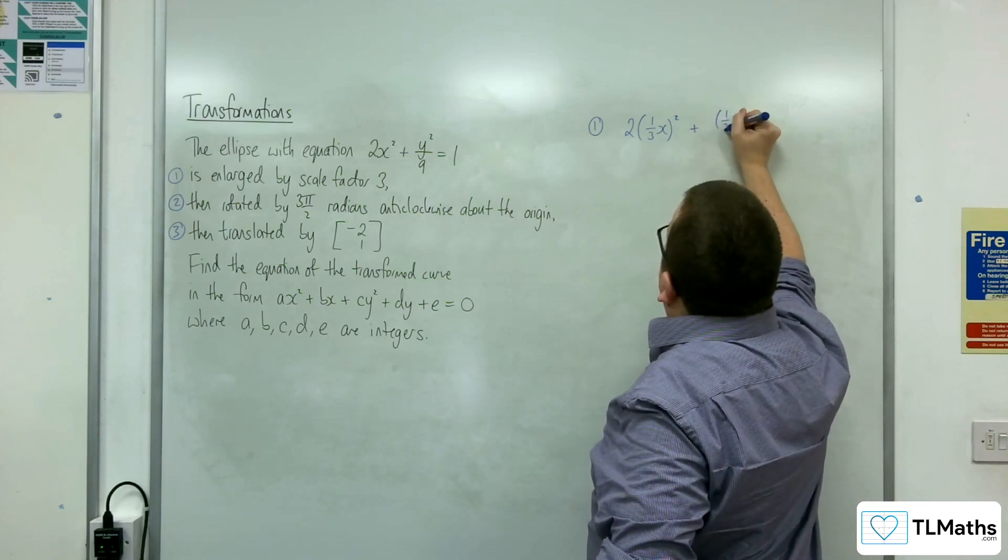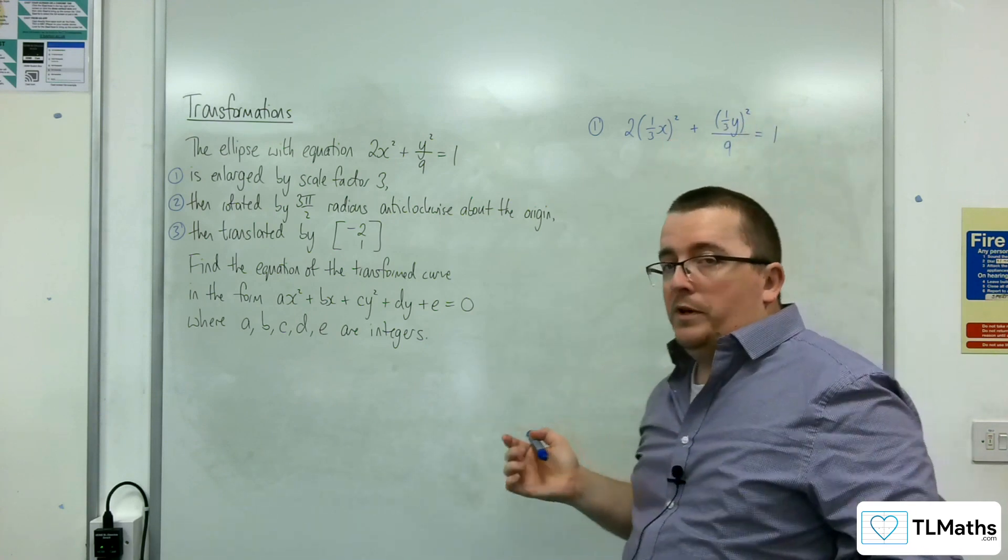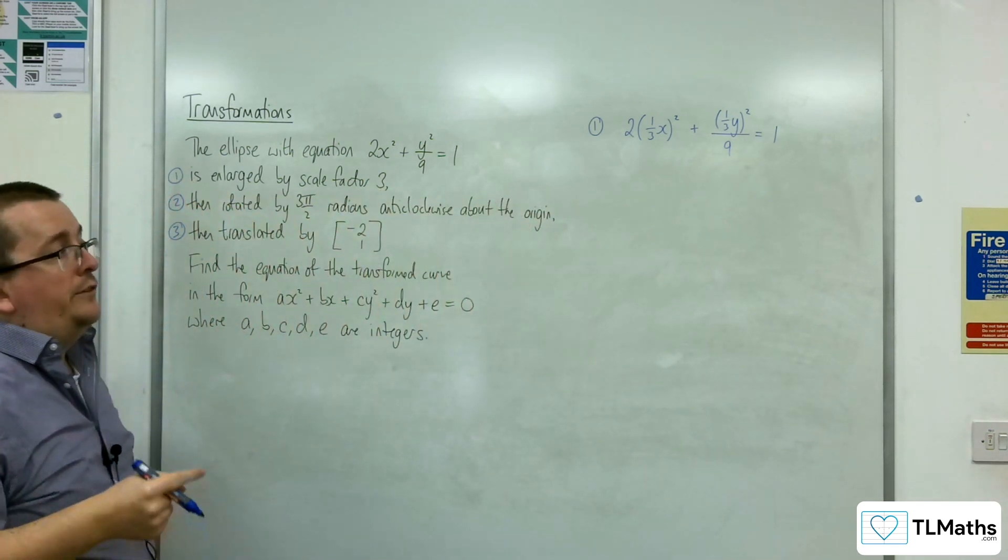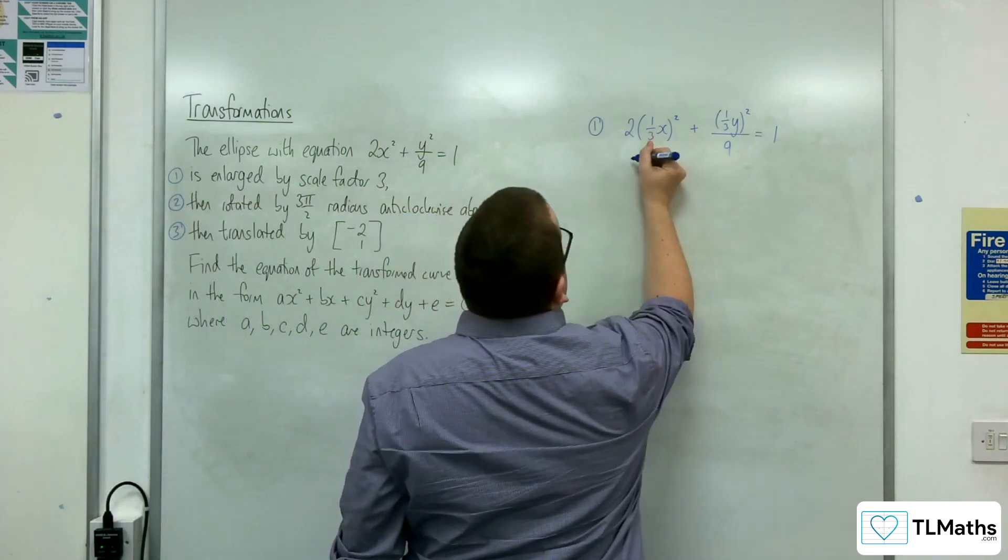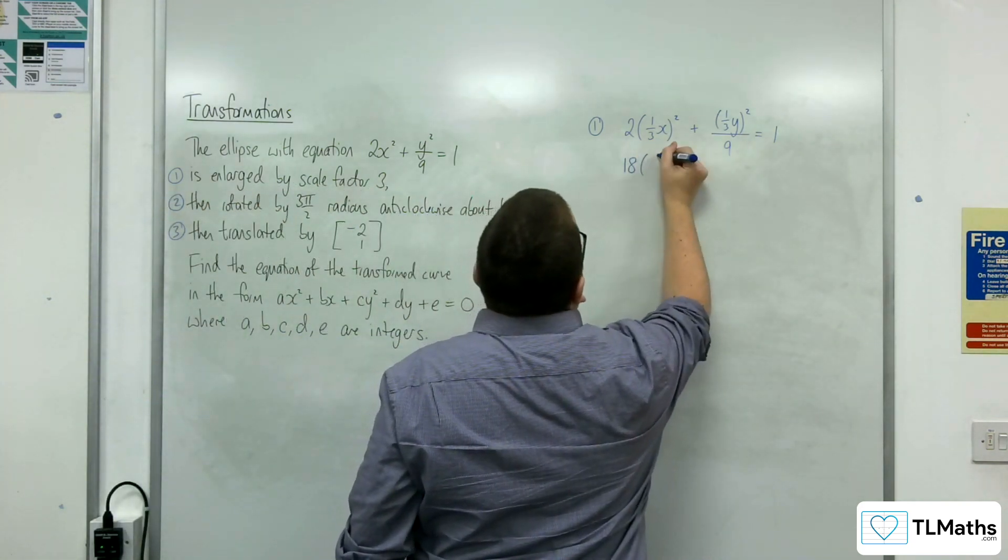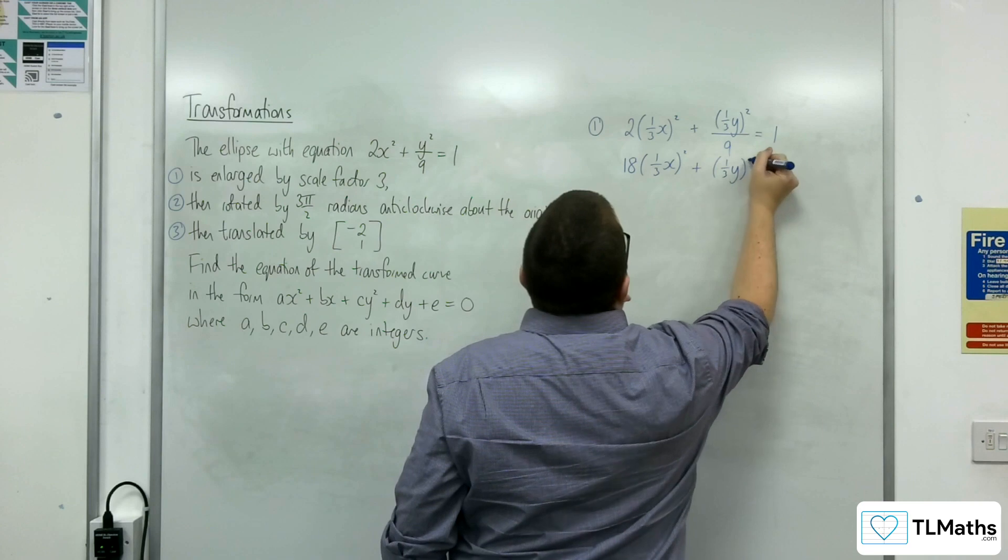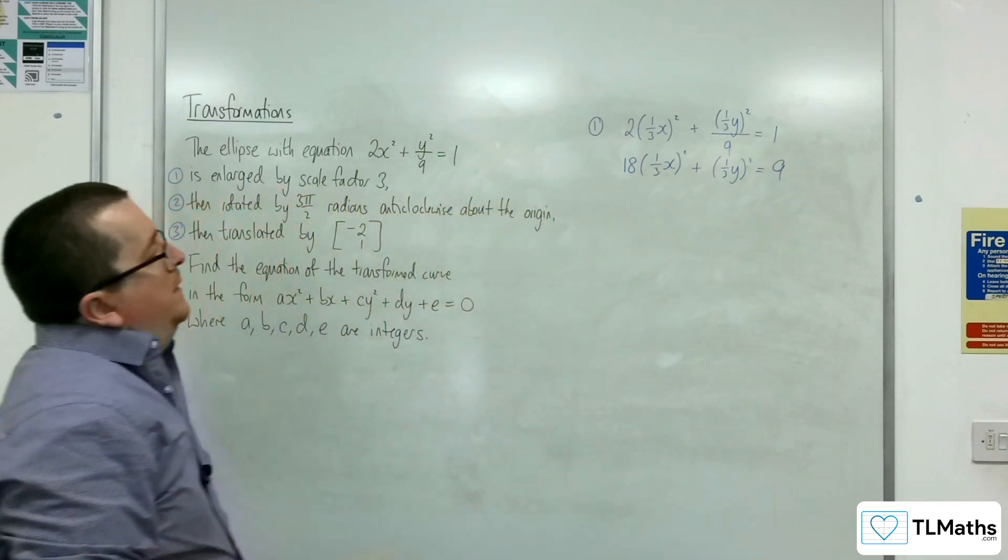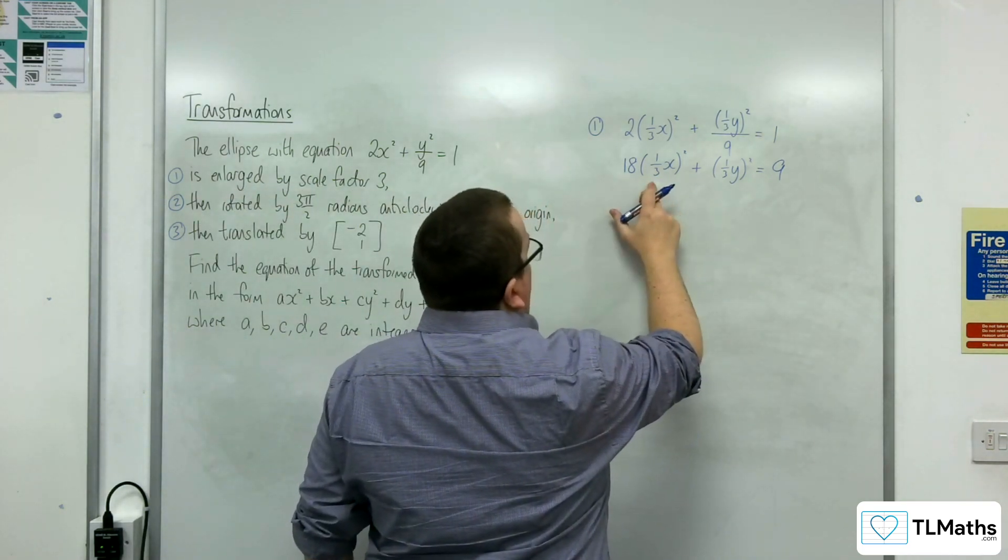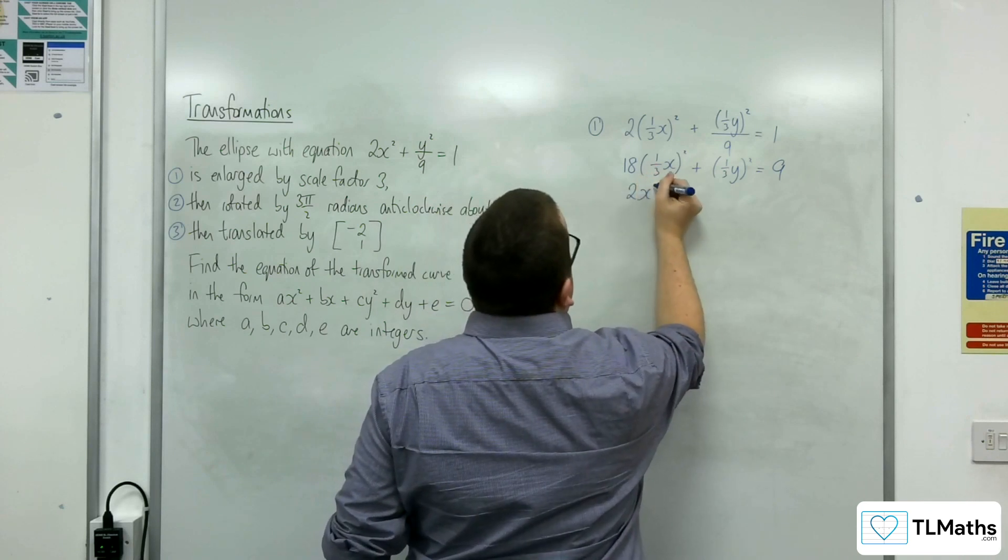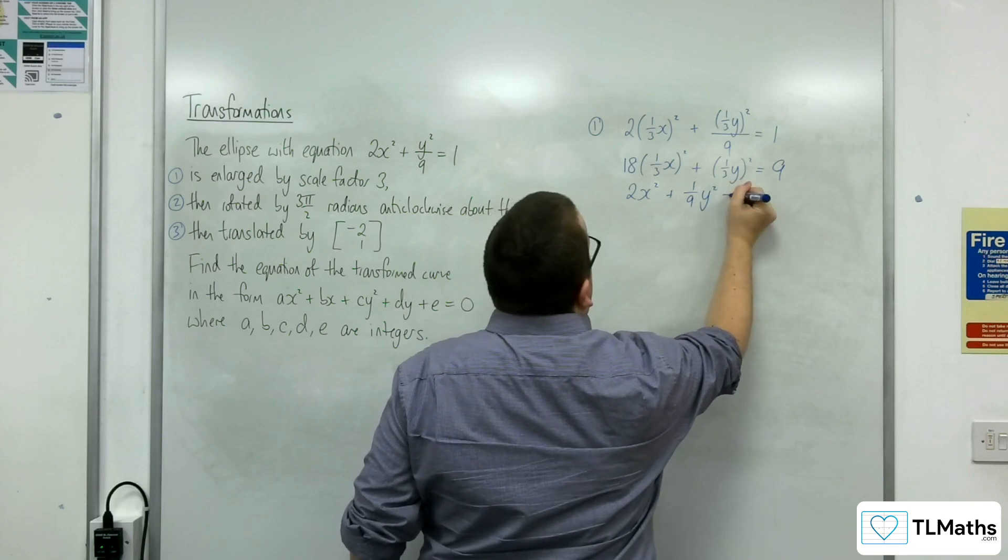So 1 third y squared all over 9 equals 1. Make sure that you're putting these in brackets to make sure that you're squaring the thirds as well. The first thing I'd probably do is multiply through by the 9. So we would get 18 lots of 1 third x all squared plus 1 third y squared equals 9. Then we've got the 1 third squared, which is 1 ninth. 18 times 1 ninth is 2. So we'll have 2x squared plus 1 ninth y squared is equal to 9.